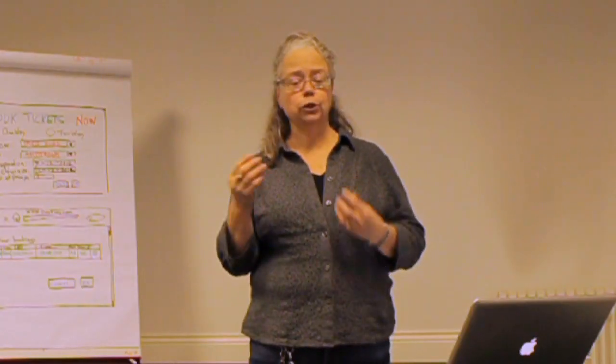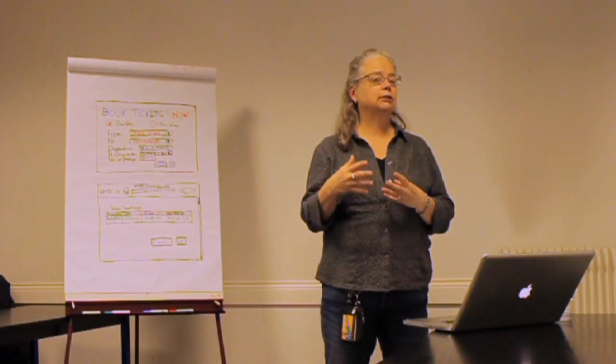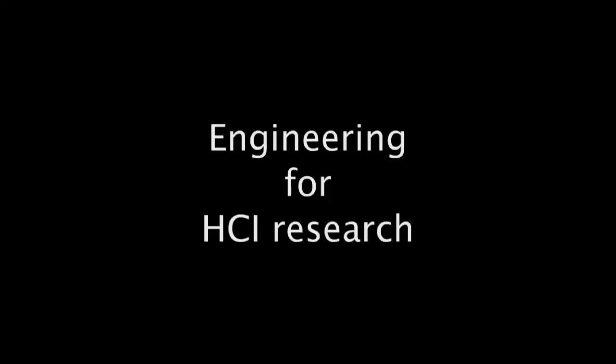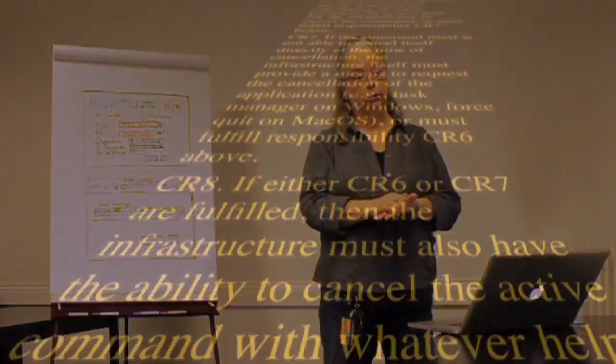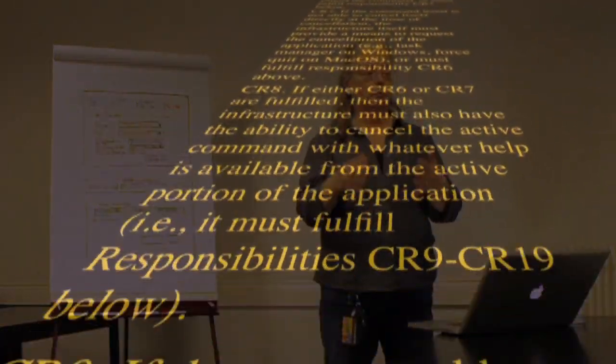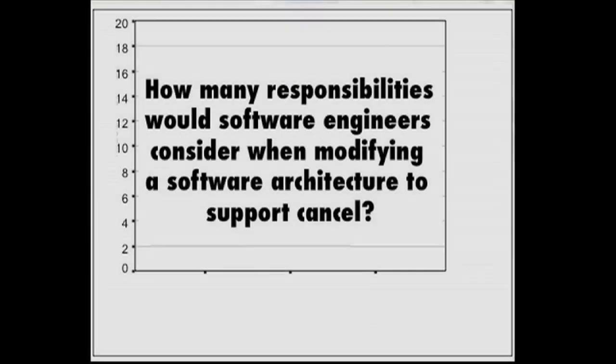And there's a mismatch because HCI people believe the software engineers know how to implement this. We in engineering for HCI research can solve this problem by identifying all the responsibilities that people would have to implement and presenting them to software engineers. And in fact, we did that. To find out if our ideas could actually help software engineers, first we did a controlled experiment in the lab asking the question, how many responsibilities would software engineers consider when modifying a software architecture to support cancel?